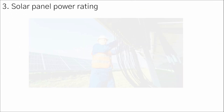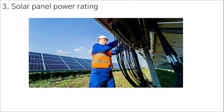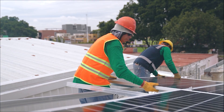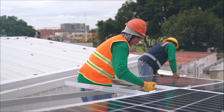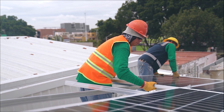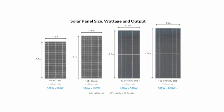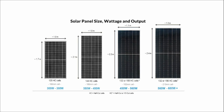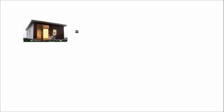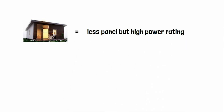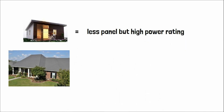The rated wattage specified by the panel manufacturer can give you an idea of how much electricity you can expect to generate. This is called the power rating and it's measured in watts. Solar panel power ratings range from 250 to 450 watts. If you have limited roof space, you may consider a higher power rating to use fewer panels. If you want to spend less per panel, you may consider a lower wattage.